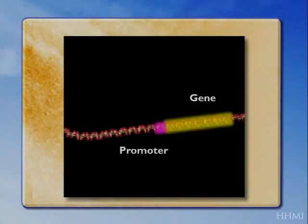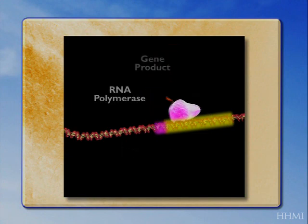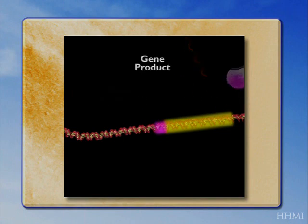This is a gene with the yellow part of the DNA — the coding part colored yellow. That might encode something like a lens protein. It would normally only be expressed if an RNA polymerase lands on the gene's promoter and makes a messenger RNA from the gene.